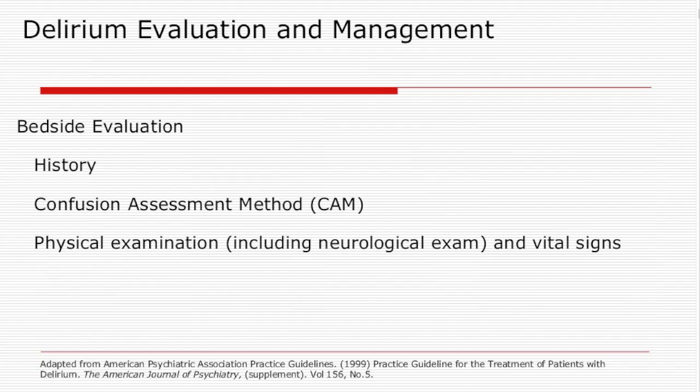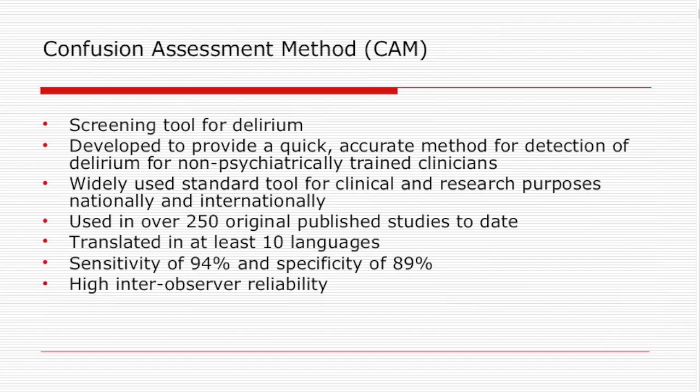We're going to talk about how to assess for delirium at the bedside. The most important thing is to get a history from the patient, family, or someone who knows the individual well, because if you don't recognize that there's been a change, you won't recognize delirium. We use the Confusion Assessment Method here at Stanford, and many hospitals around the world use this method because it's very simplistic and easy to do. A physical exam including neurological exam and vital signs is also very important.